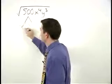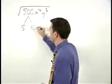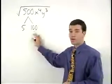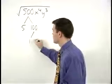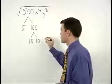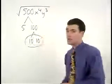500 is 5 times 100, and you should be able to recognize 100 as a perfect square, 10 times 10. So to start with we have a pair of 10s.